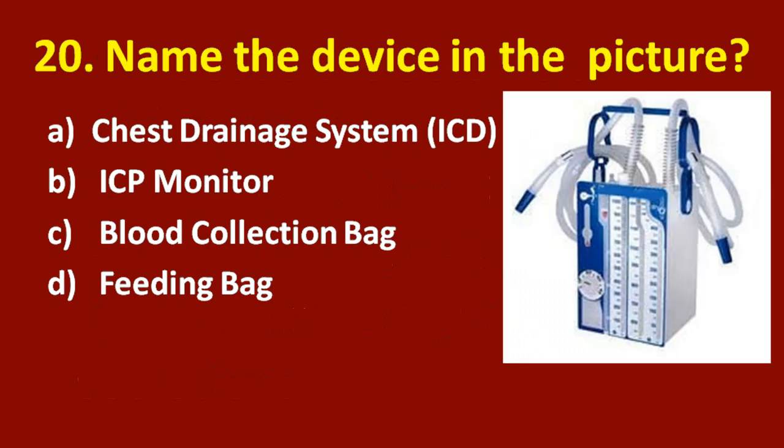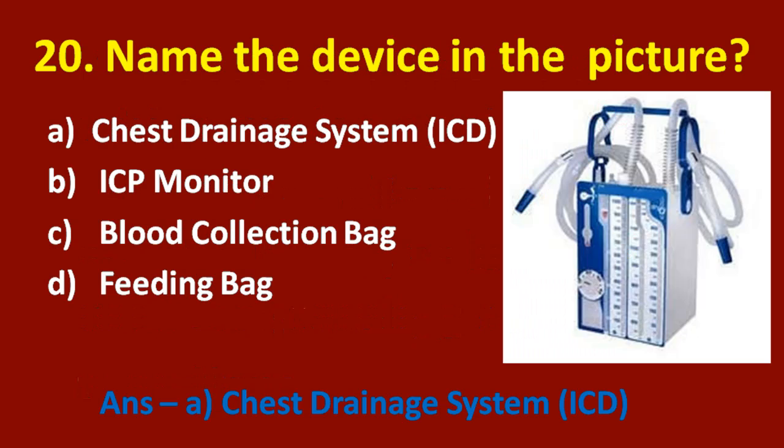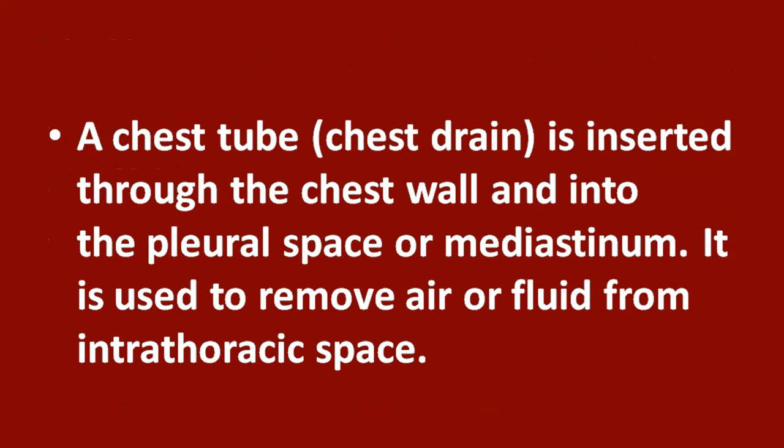Question number 20: name the device in the picture. Option A: chest drainage system or ICD. Option B: ICP monitor. Option C: blood collection bag. Option D: feeding bag. The correct answer is option A, chest drainage system. A chest tube or chest drain is inserted through the chest wall and into the pleural space or mediastinum. It is used to remove air or fluid from the intrathoracic space.